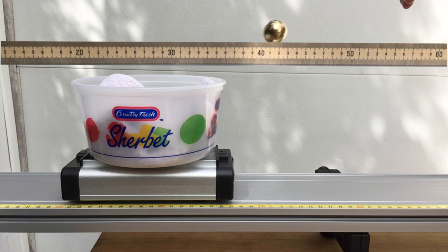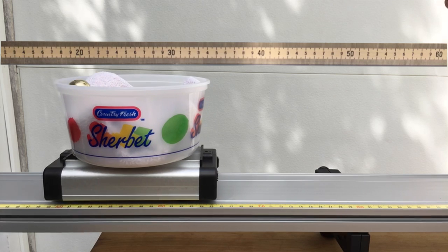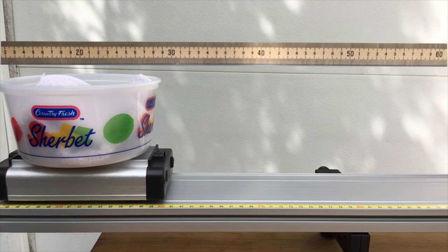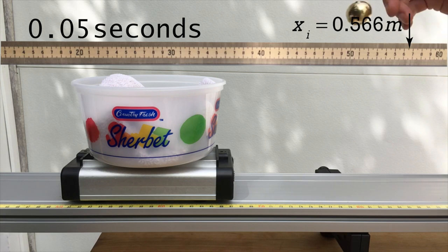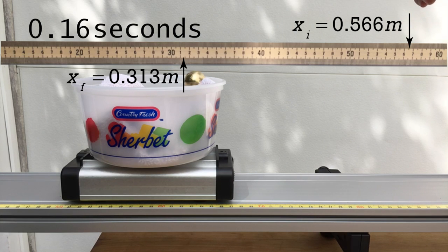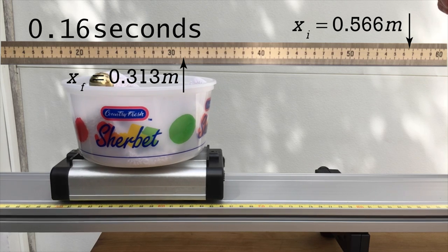I overlaid a picture of a meter stick on the video to show that right before the collision, the brass ball goes from a position of 0.566 meters to 0.313 meters in 0.16 seconds.